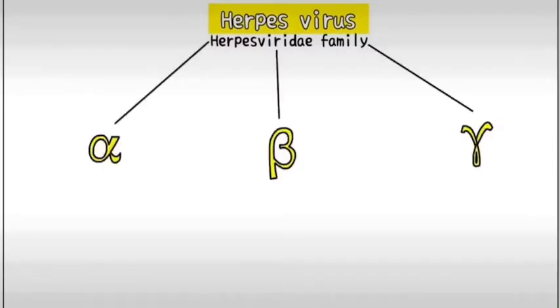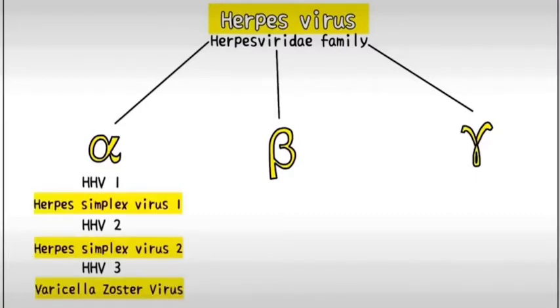The herpes virus belongs to the Herpesviridae family and is broadly subdivided into alpha, beta, and gamma. HHV stands for human herpes virus. Alpha subdivision contains HHV1, 2, and 3, which are commonly known as herpes simplex virus 1, herpes simplex virus 2, and varicella zoster virus respectively.